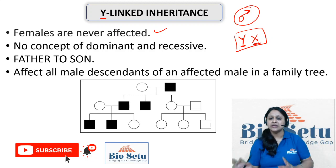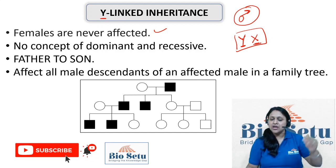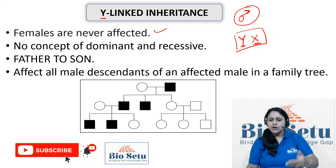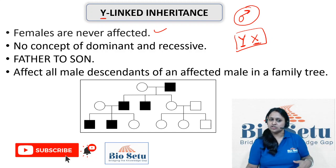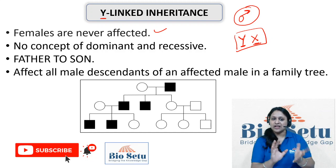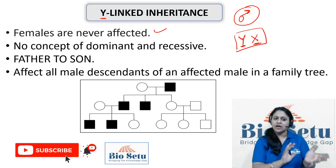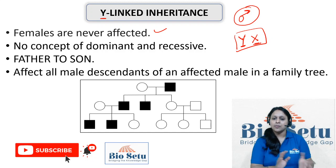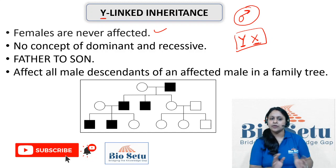We only deal with the Y-linked inheritance trait, where the Y chromosome passes from father to son, then to the next generation, then to the next generation. So transmission is always father to son — no father to daughter, no mother to son, no mother to daughter.